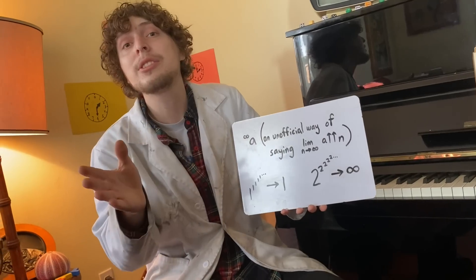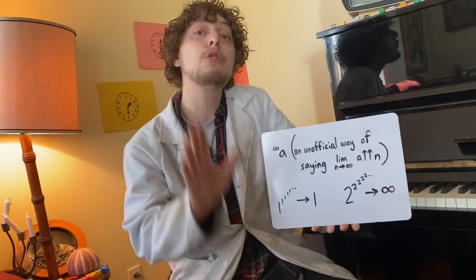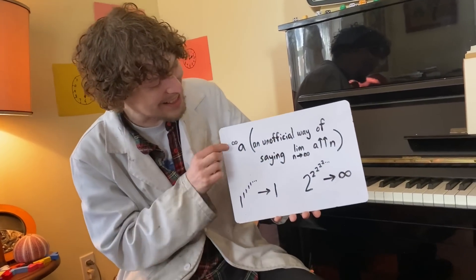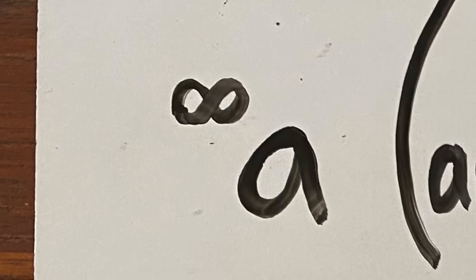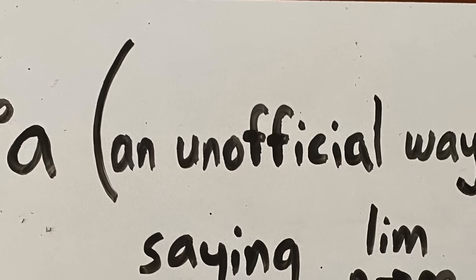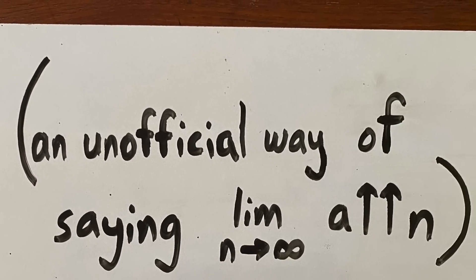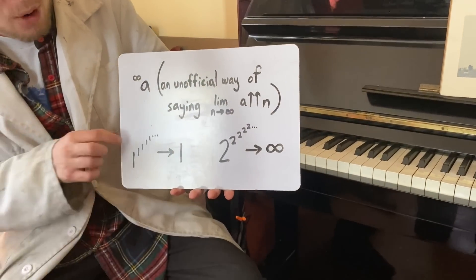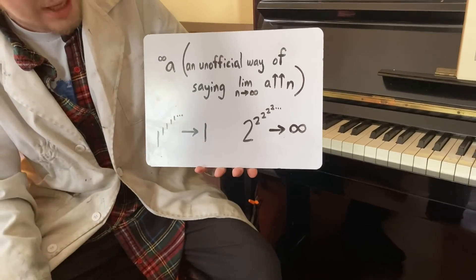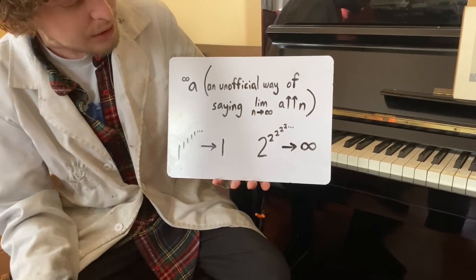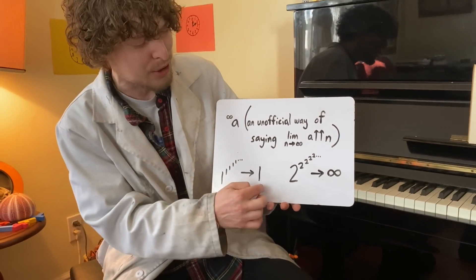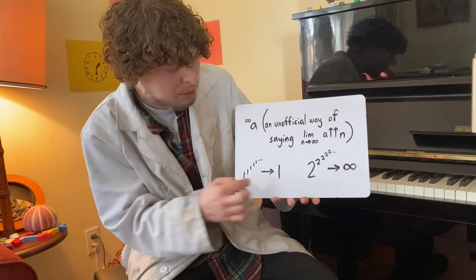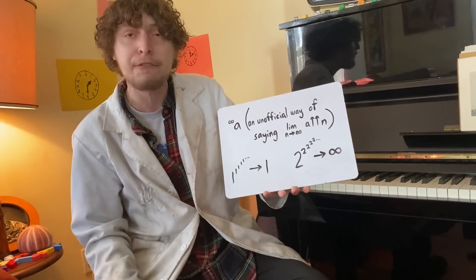Now instead of looking at pentation and beyond, what if we looked at tetration but with an infinitely tall stack? This is my unofficial way of writing that. More formally we might write something like the limit as n approaches infinity as we tetrate a to n. Well, two or three or four will obviously spiral up toward infinity, but one, even if we make an infinitely tall stack of them, stays at one. So are there any other numbers, maybe in between one and two, that converge to some finite value even if we make their tetration stack infinitely tall?